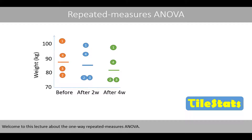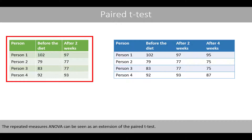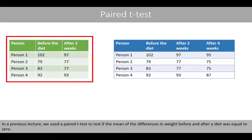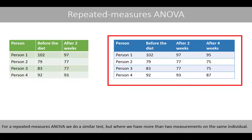Welcome to this lecture about the one-way repeated measures ANOVA. The repeated measures ANOVA can be seen as an extension of the paired t-test. In the previous lecture, we used the paired t-test to test if the mean of the differences in weight before and after a diet was equal to zero. For repeated measures ANOVA, we do a similar test, but where we have more than two measurements on the same individual.